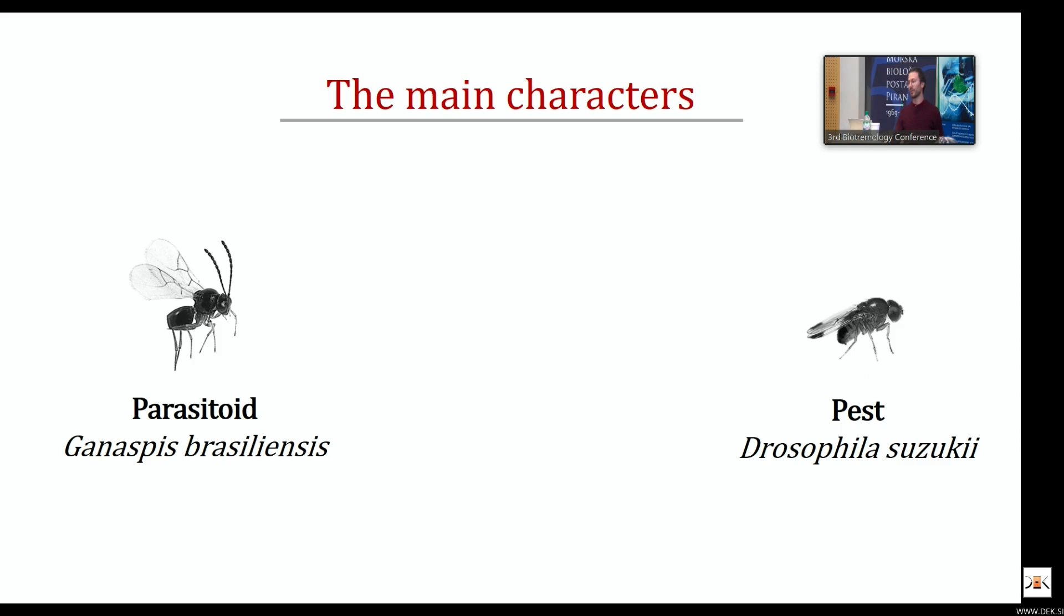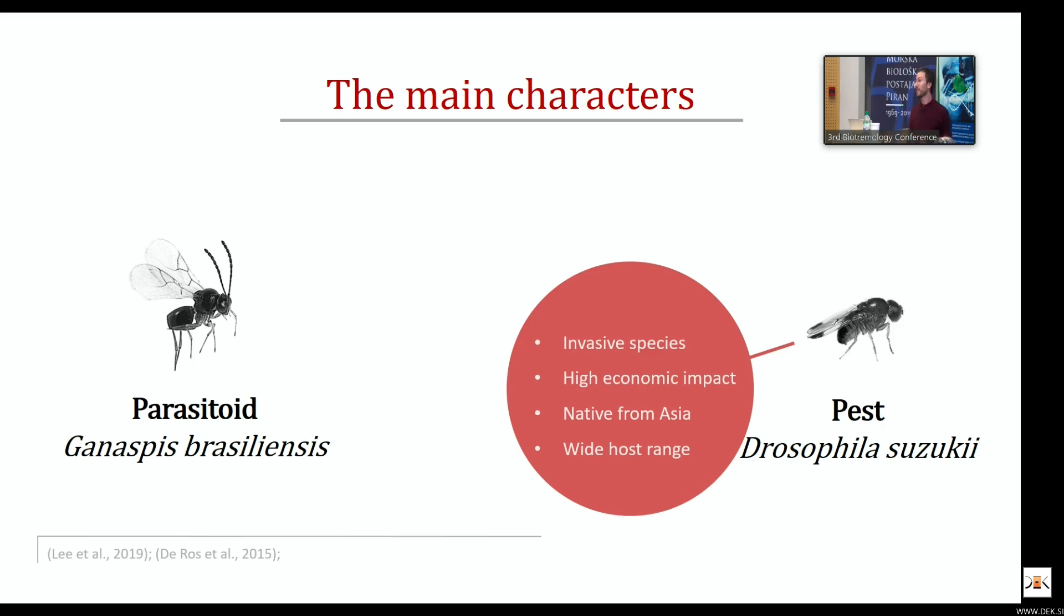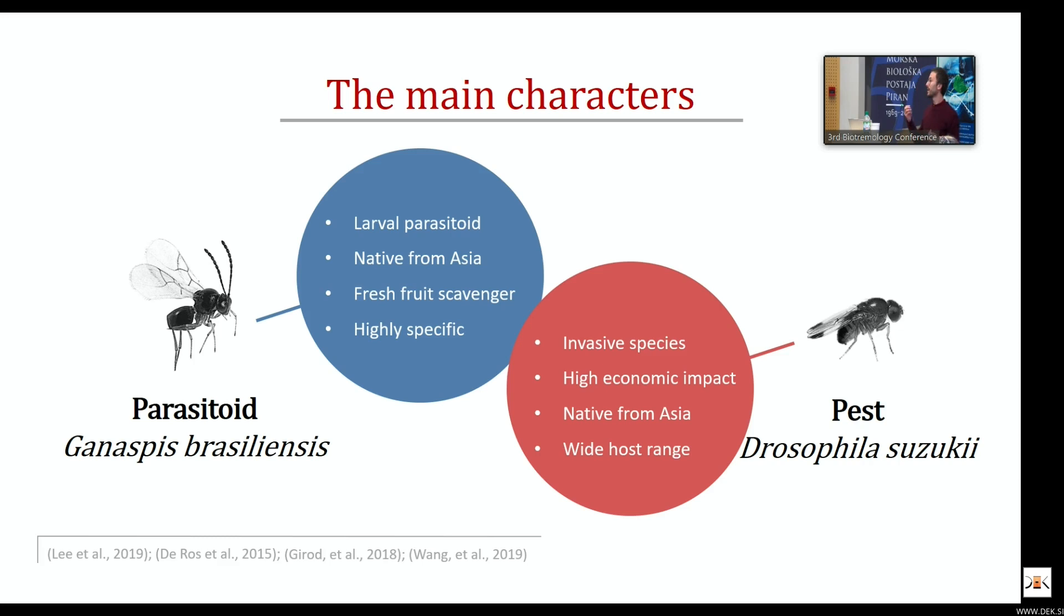These are the main characters of this story. We have the pest, which is Drosophila suzuki, an invasive alien species which came to Trentino and North America first, then to Europe. It's native from Asia and has very high economical impact, especially on soft berries and cherries. In Trentino alone it can make damage up to 4 million euros. The parasitoid is Ganaspis brasiliensis, which is a larval parasitoid and very specific to Drosophila suzuki. That's why it's been chosen as the main candidate for biological control programs.